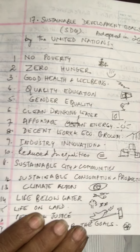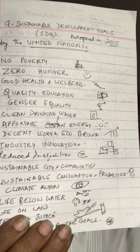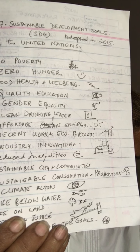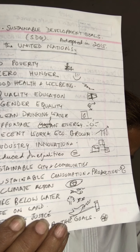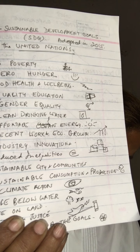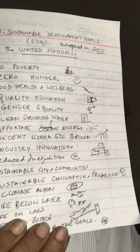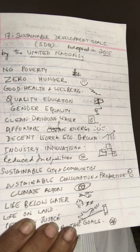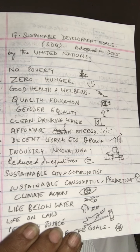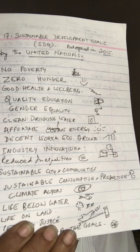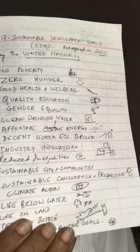These are the 17 sustainable development goals. This is the 2030 agenda — 17 sustainable development goals adopted in 2015. They give a framework for addressing challenges, put forward by the United Nations. The 70th session of the United Nations General Assembly, held on 25th September 2015, adopted the document titled 'Transforming Our World: The 2030 Agenda for Sustainable Development,' consisting of 17 SDGs and 169 associated targets.